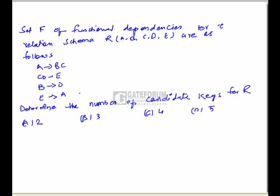This question gives functional dependencies for a relation R, and we have to find the number of candidate keys. The given functional dependencies are: A gives BC, CD gives E, B gives D, and E gives A.